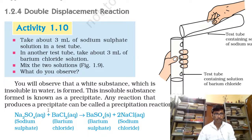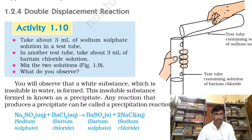If you see your NCERT book, you will find the discussion there, and there is also an experiment with an equation. It shows the reaction between sodium sulphate and barium chloride to get barium sulphate and sodium chloride. We will just take a look at the demonstration of the experiment.